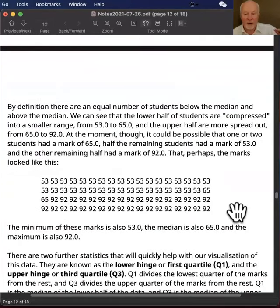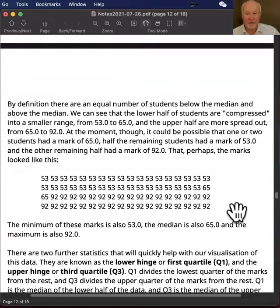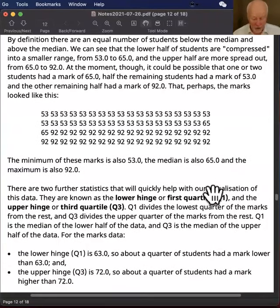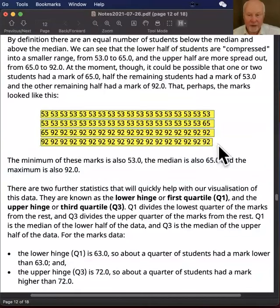Now the statistics that we've got so far could have come from data sets that had a lot of different characteristics. So they could have looked like this. If you look at this data set here, what you see is we've got a whole lot of 53's, and then we've got two 65's, and a whole lot of 92's. And that data set would also have a minimum of 53, a median of 65, and a maximum of 92.